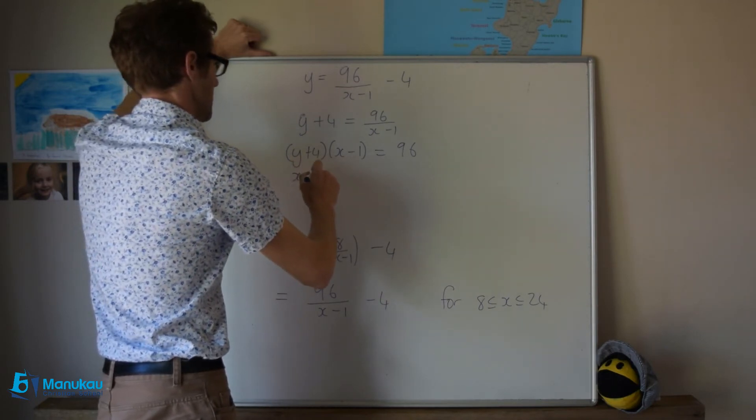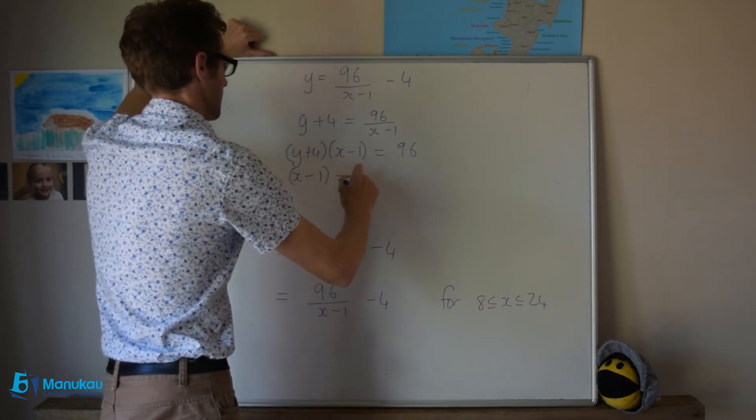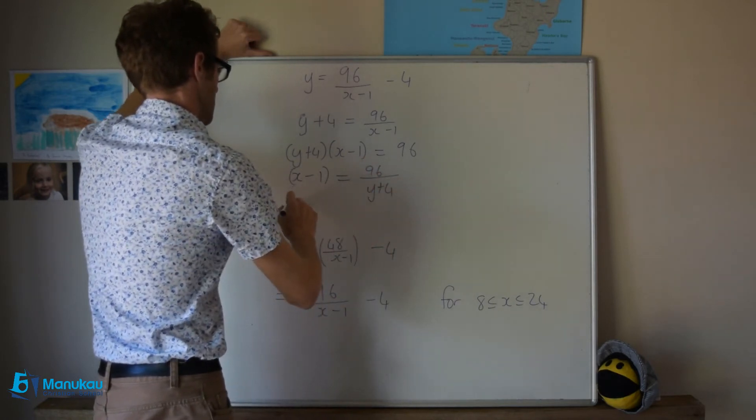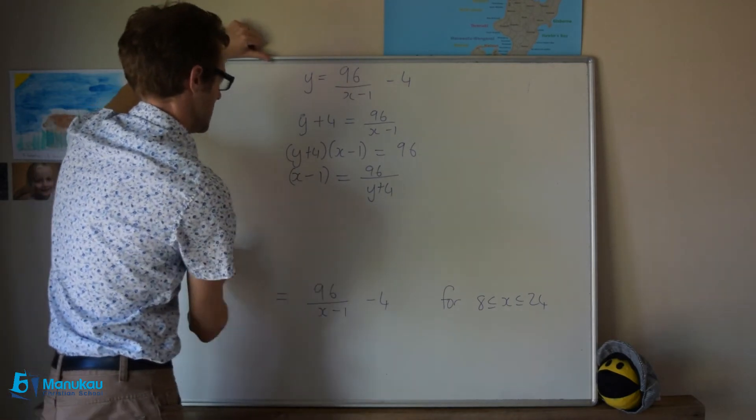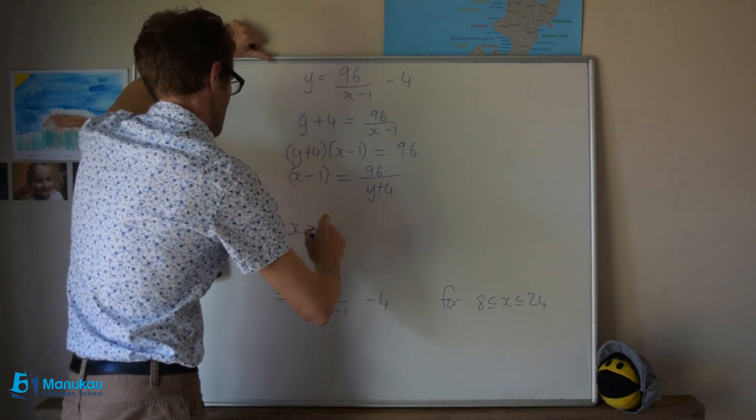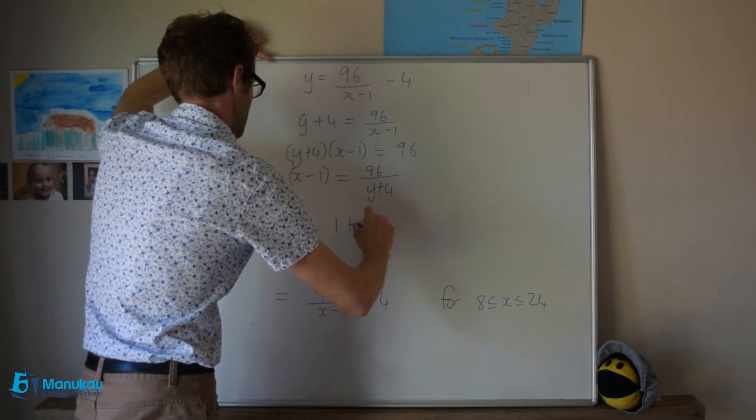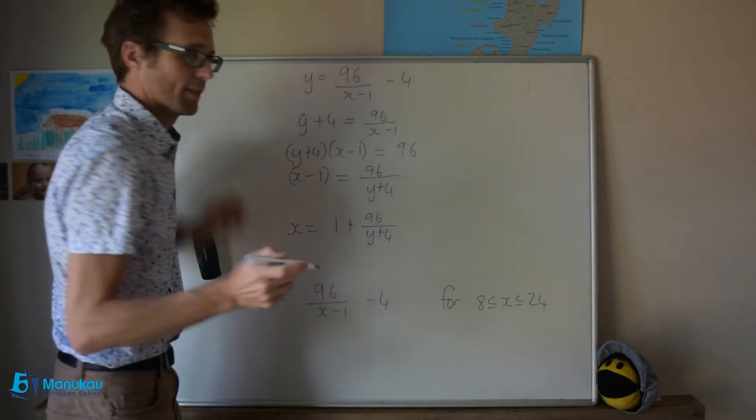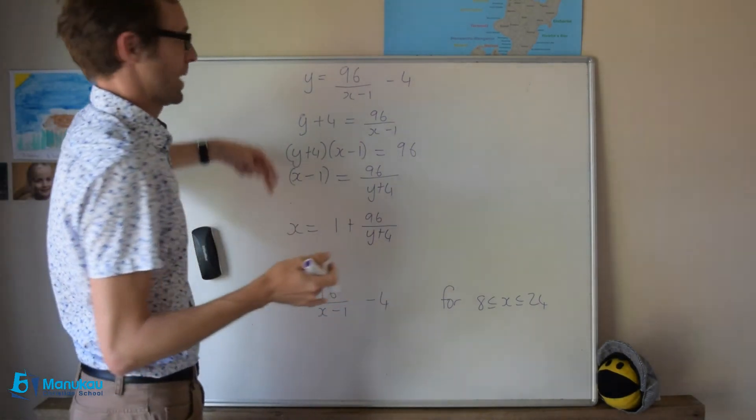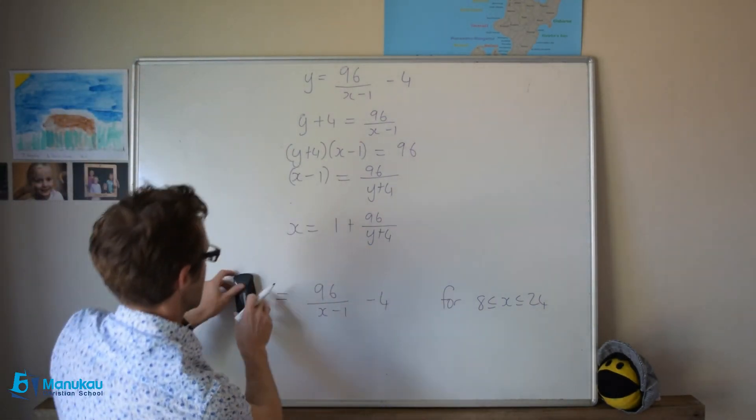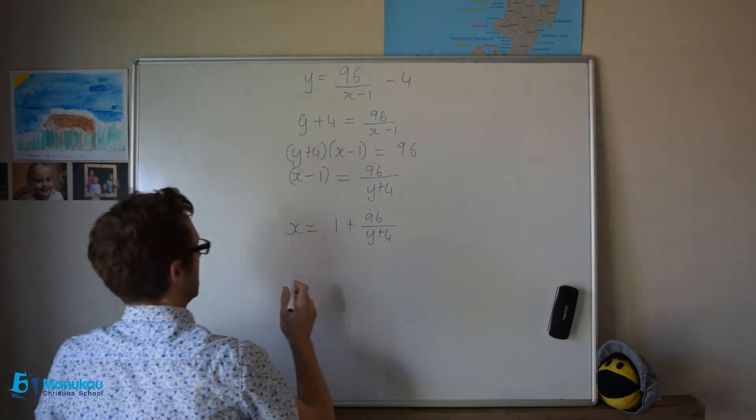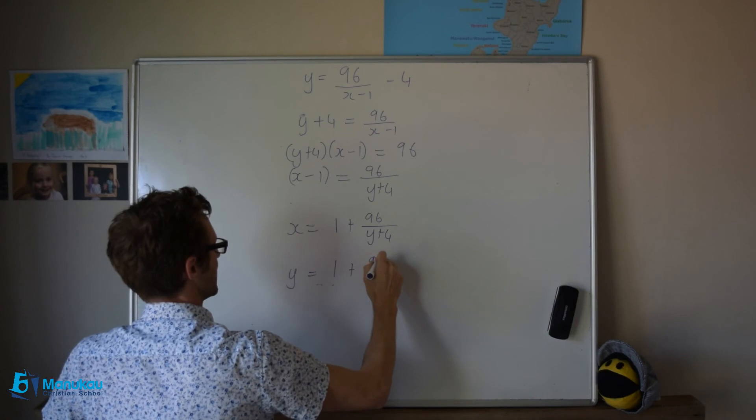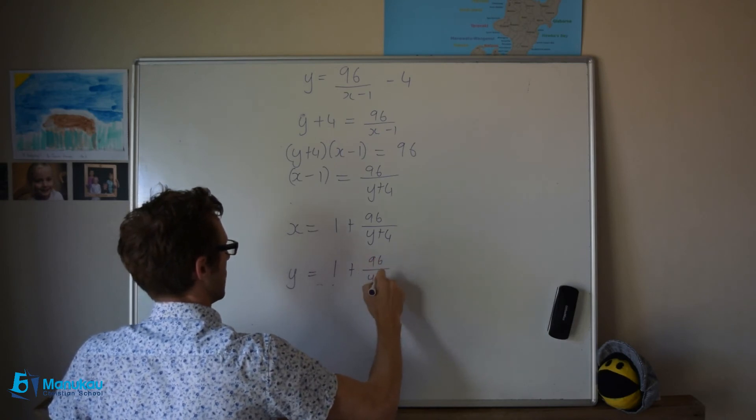Then I'm going to go x minus 1 is equal to 96 all over y plus 4. And then x is equal to 1 plus 96 over y plus 4. Now we can do our magic wand. I should have perhaps done it earlier, but we can do it at the end here is fine. And I will have y is equal to 1 plus 96 over x plus 4.